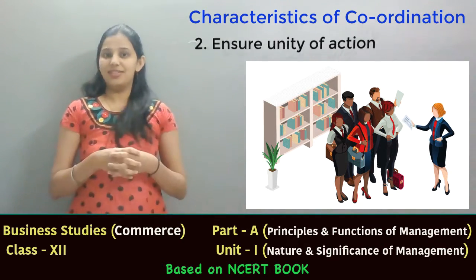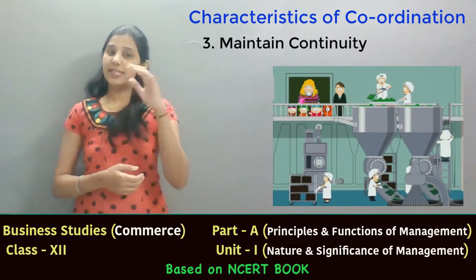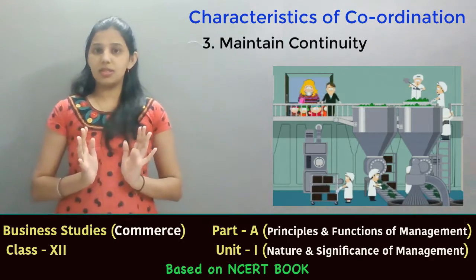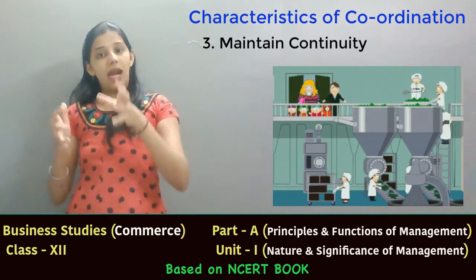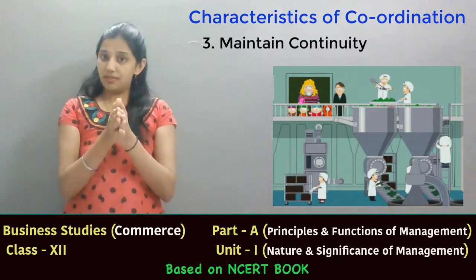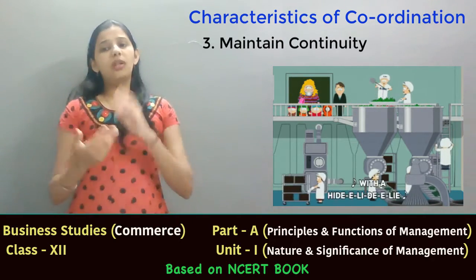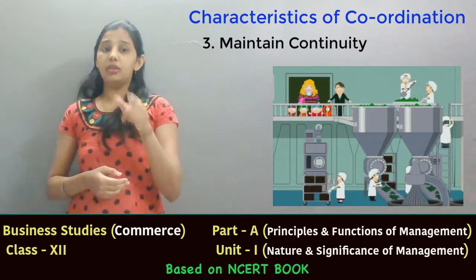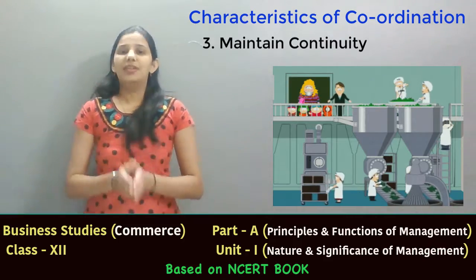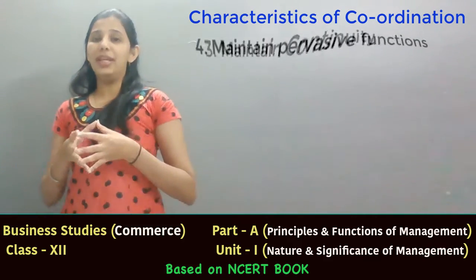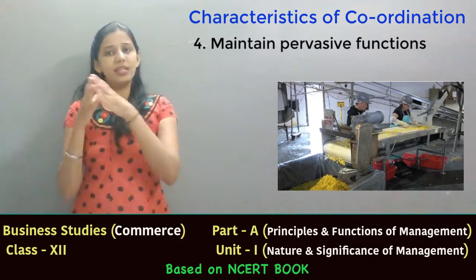The third feature is to maintain continuity — it is a continuous process. Coordination starts at planning and continues till controlling and delivering the products or services. A manager has to coordinate continuously all the activities of different departments in order to meet the targets by using the available resources efficiently. The fourth feature is that it is an all-pervasive function, meaning coordination is required at all levels.